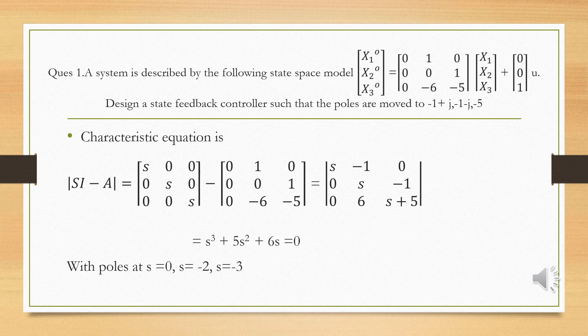We need to find the gain matrix K. First, we start with the existing characteristic equation: determinant of sI minus A equals zero. Computing the determinant gives s cubed plus 5s squared plus 6s equals zero. Solving, the existing poles are at s equals 0, minus 2, minus 3.